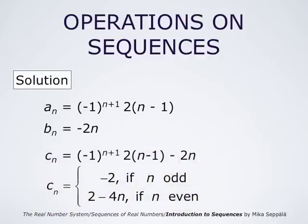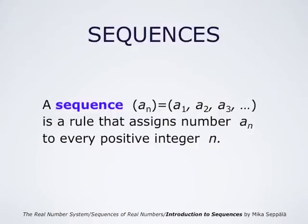This can be simplified. It is -2 if n is odd, because if n is odd, n+1 is even and (-1) to an even power is 1, so cₙ = 2(n-1) − 2n = -2. When n is even, n+1 is odd and (-1)^(n+1) = -1, giving 2 − 4n. To summarize: a sequence aₙ is an infinitely long list of numbers a1, a2, a3, and so forth — a rule assigning the number aₙ to every positive integer n. In certain applications one may also deal with finite sequences, such as barcodes.